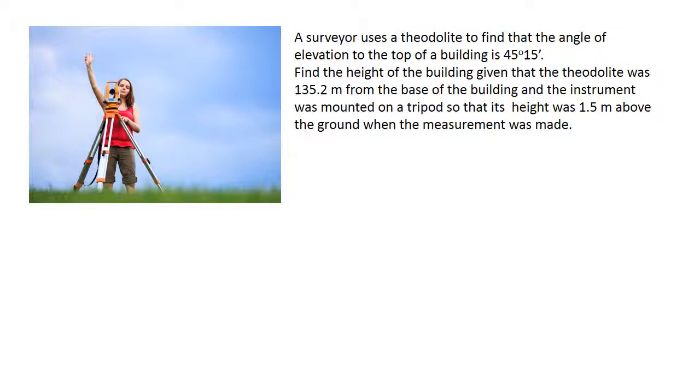A surveyor uses the theodolite to find that the angle of elevation to the top of a building is 45 degrees and 15 minutes. Find the height of the building given that the theodolite was 135.2 metres from the base of the building and the instrument was mounted on a tripod so that its height was 1.5 metres above the ground when the measurement was made.